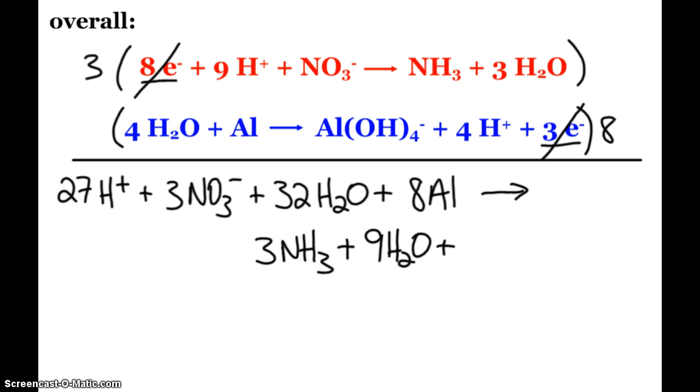Then from the other reactions, I have eight of those aluminum complex ions and 32 hydrogen ions. Boy, that looks complex, but it's okay, we're doing it the right way.